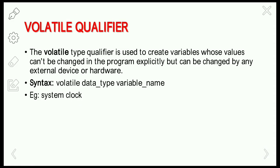The volatile qualifier is the reverse of the constant type qualifier. While const variables don't change during program execution, volatile is used to create variables whose values can't be changed explicitly in the program but can be changed by any external device or hardware. The syntax is: volatile [data type] [variable name].